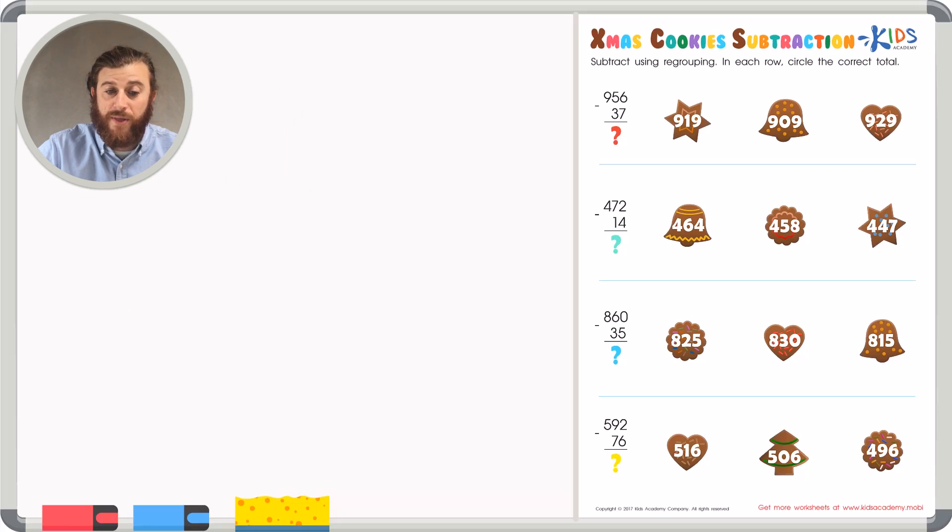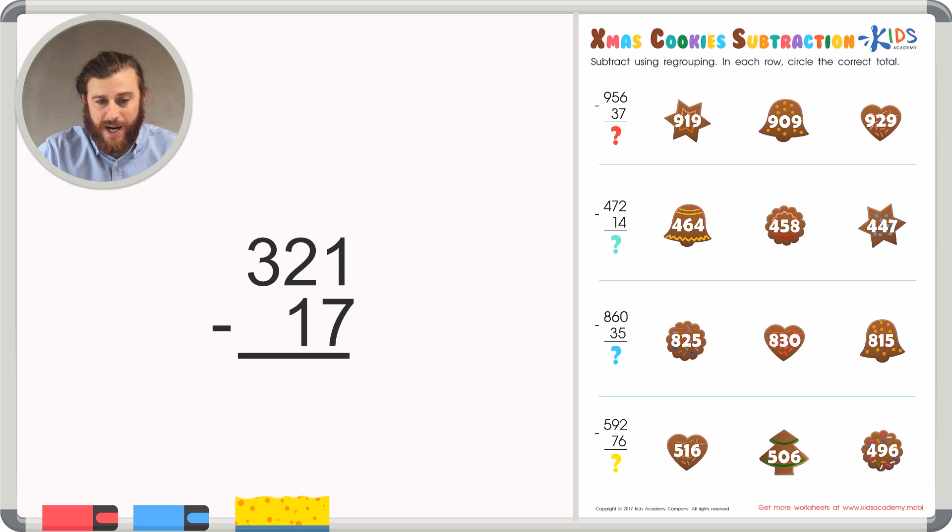Let's take for example the number 321 minus 17. In this problem you'll see that the top number in the ones place is smaller than the bottom number in the ones place.